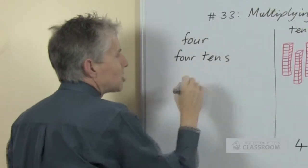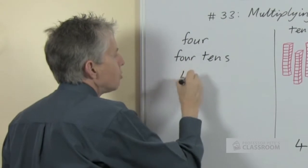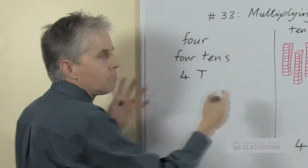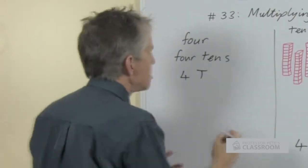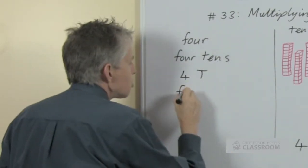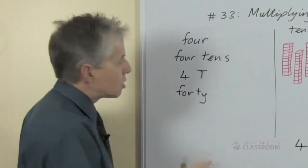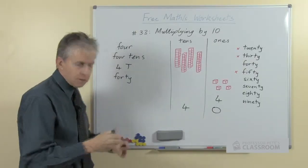We can abbreviate that with the symbol for 4 and then a capital T to stand for tens, and we can make two-digit numbers using this abbreviation. Then we can talk about what we call that, and of course we call it 40, which looks a lot like 4 and the T is for tens.